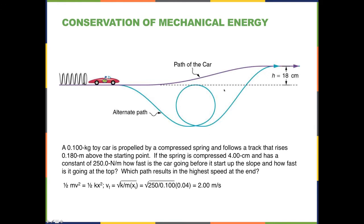The kinetic energy the car achieves comes from the spring: PE_spring = ½kx². Rearranging for velocity: v = √(k/m) × x. The halves cancel when you rearrange and take the square root. Plugging in the numbers: v = √(250 / 0.1) × 0.04, which gives 2 meters per second. So the car's velocity before it starts up the slope is 2 m/s.